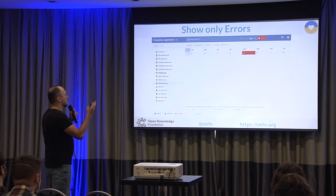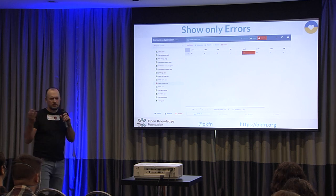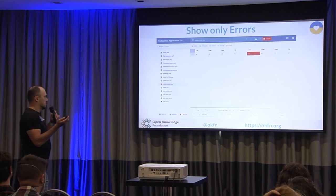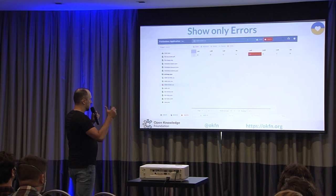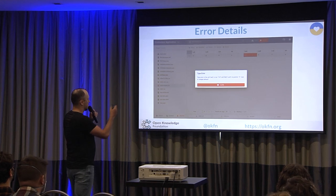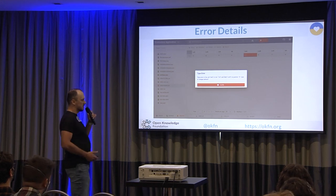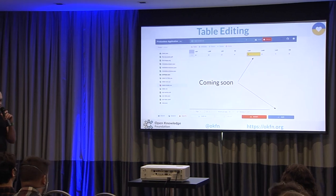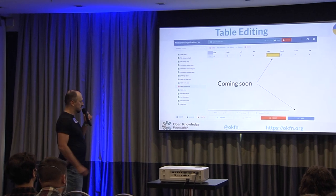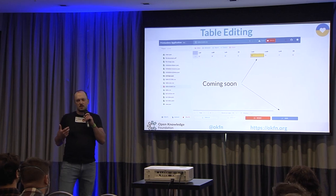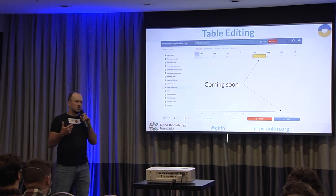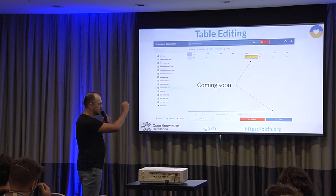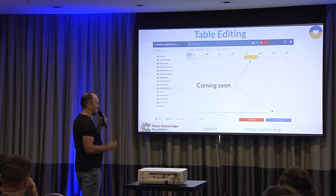It could be a 10 million row CSV table, but you can just see only the errors. You can click on a row to get details. If you'd like to clean it manually, you can do it just like in Excel — clicking on the cell, fixing the error, and saving the file.